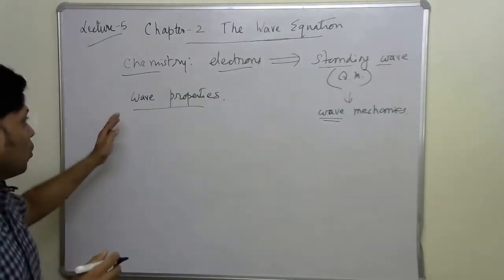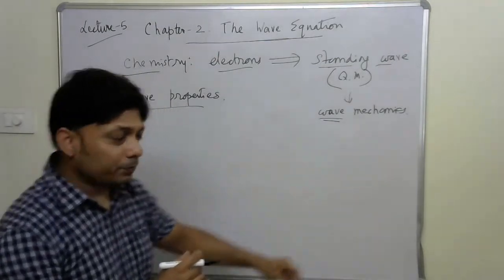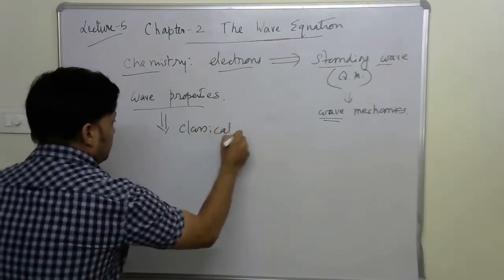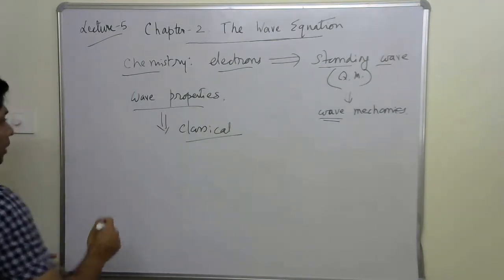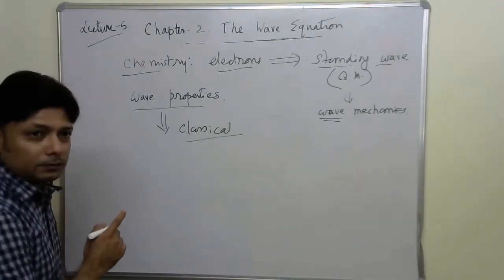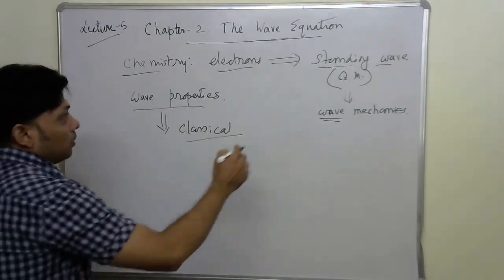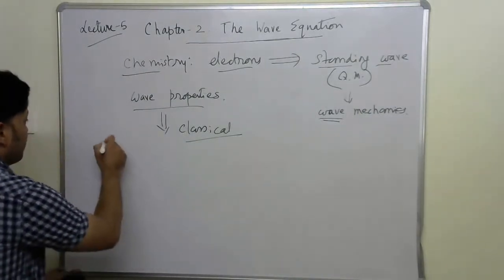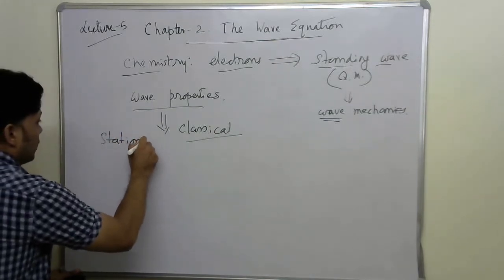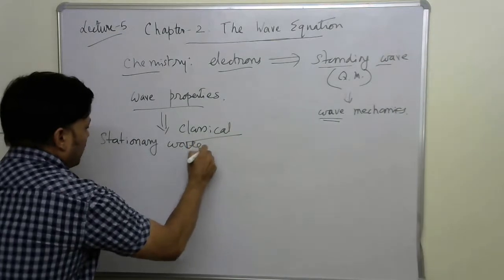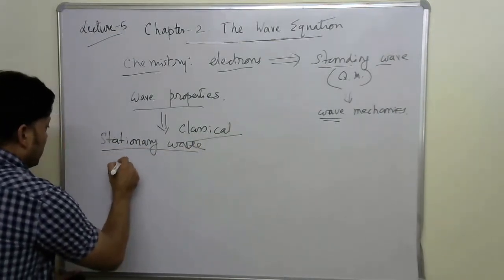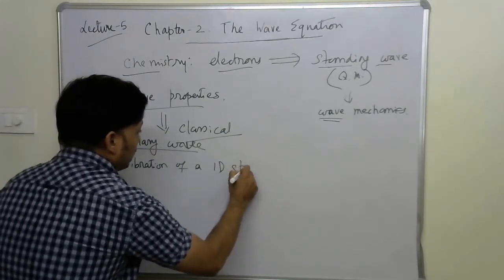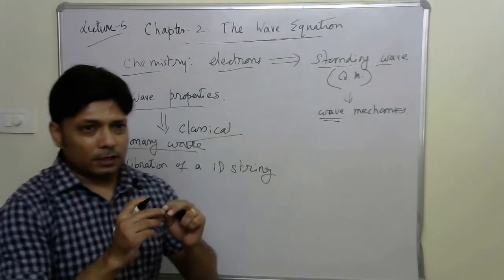Before studying wave properties within the quantum mechanical domain, it is always better to first learn wave properties under the classical domain. Under the classical domain, a good example of a standing wave — also called a stationary wave — is the vibration of a one-dimensional string.